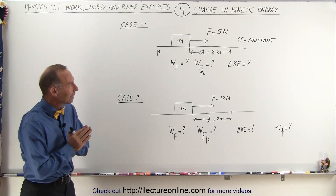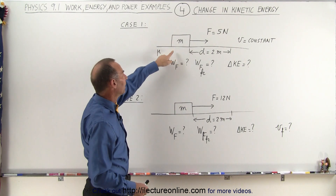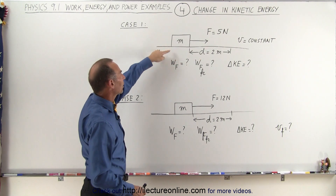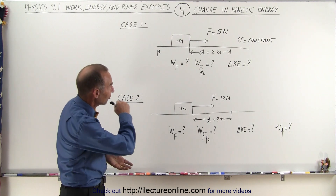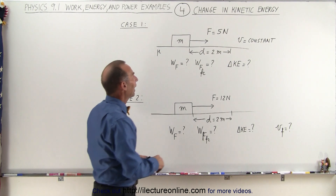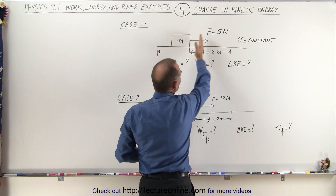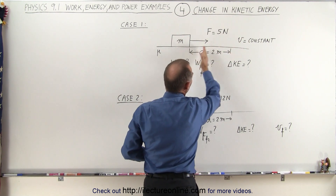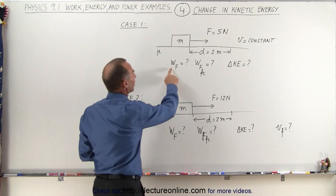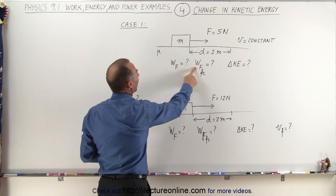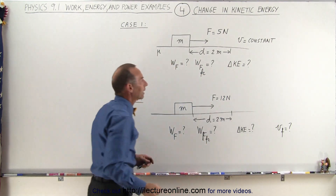Welcome to Electron Line. Let's say we have a block on a horizontal surface that has mass m. The coefficient of friction between the block and the surface is mu — the kinetic coefficient of friction, as we're going to be moving the block. A force of 5 newtons is pulling on the block, causing it to move at a constant velocity over a distance of 2 meters. We're trying to find the work done by the force, the work done by the friction force, and the change in kinetic energy.